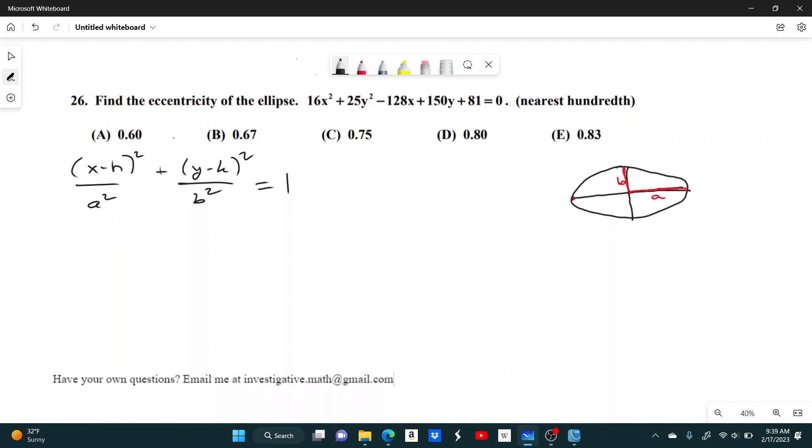So the first thing I'm going to do is just group all of the same things in the same place. So I'll put all my x's here, so 16x squared minus 128x, and then I'll have plus 25y squared plus 150y, and that equals negative 81. I'm just moving this 81 over to the right-hand side.